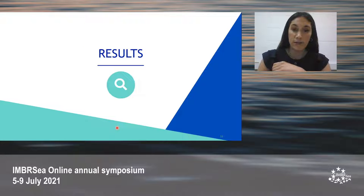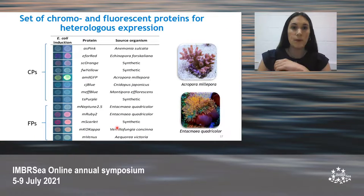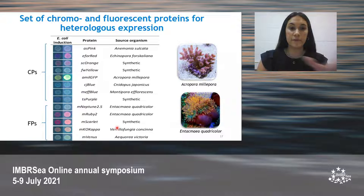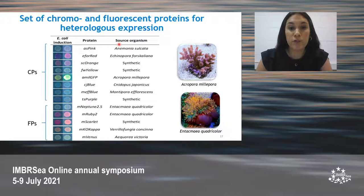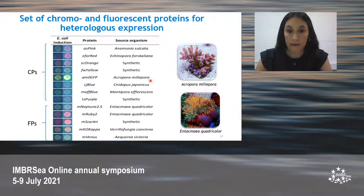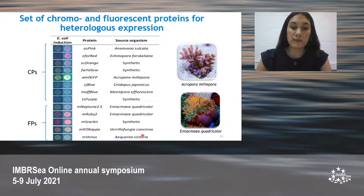In terms of the results, this is the set of proteins that we employed for the transformation of the algae, with their respective source organism, which includes anemones, sponges, and the bioluminescent jellyfish.